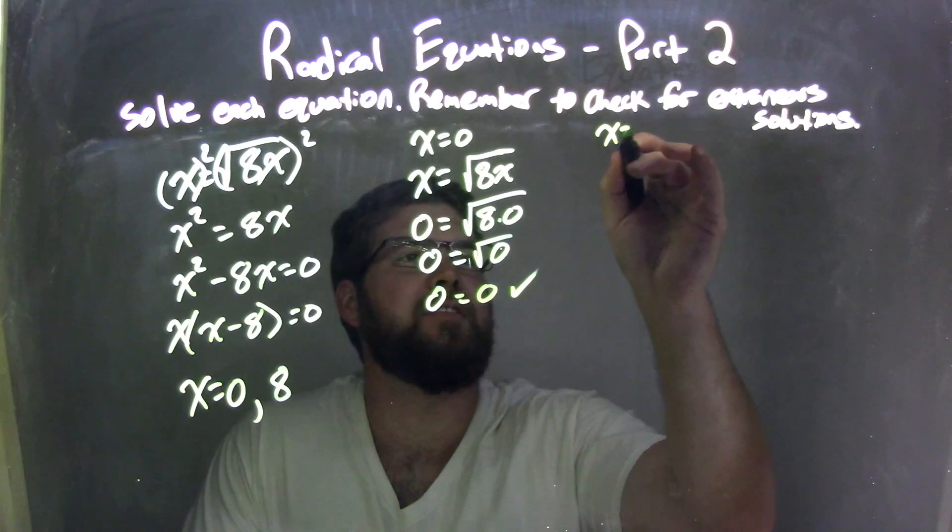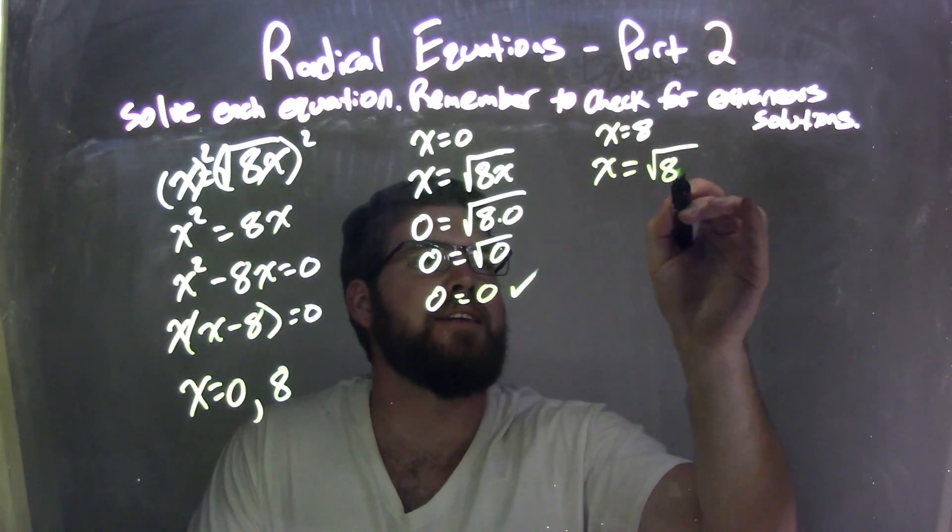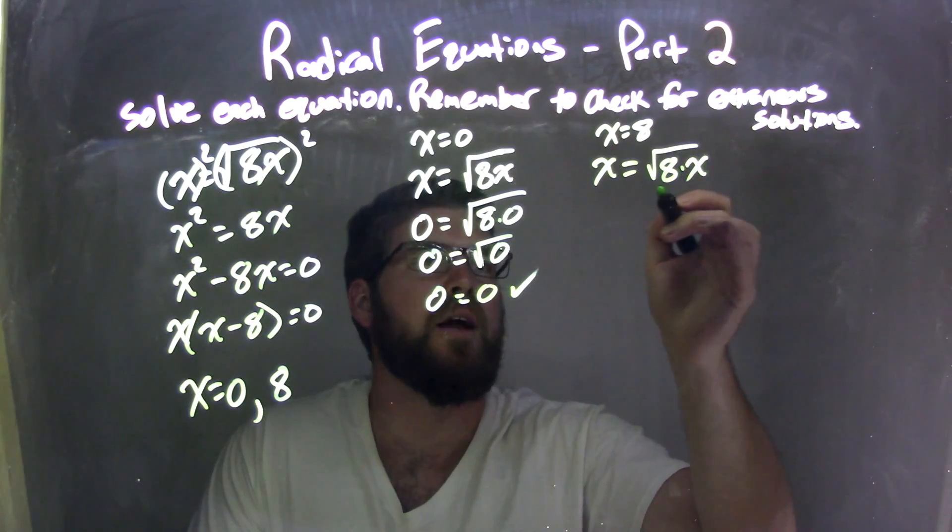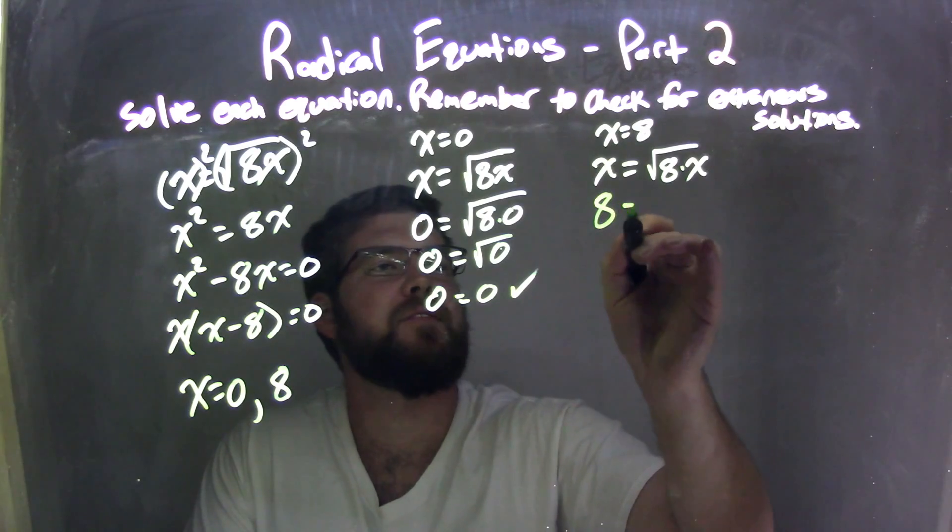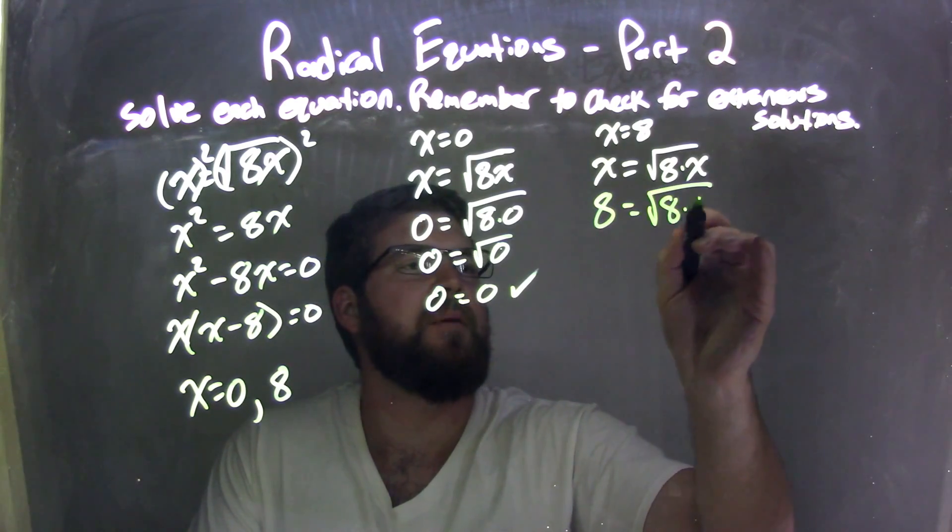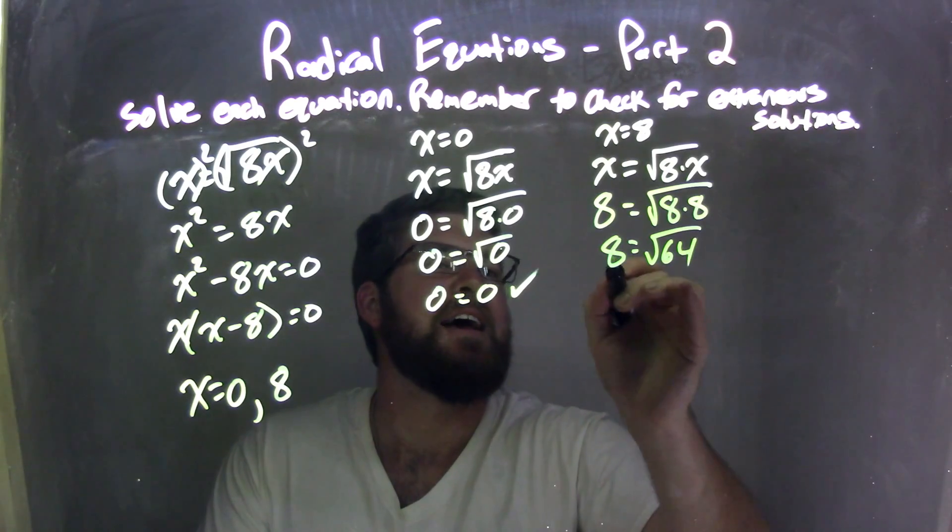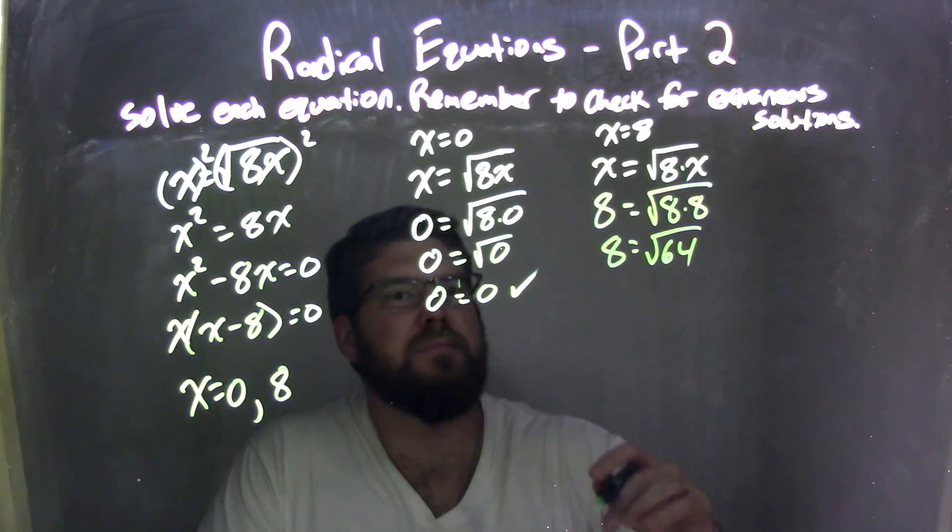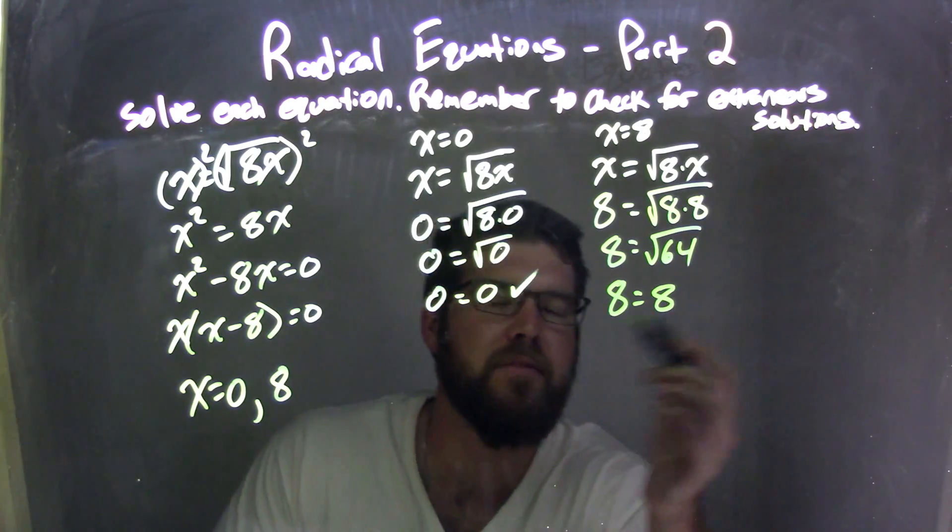Let's try the other one. x equals 8. Let's see if it's extraneous. So I'm going to take my original equation, x equals square root of 8 times x. Let's plug it in. So 8 for x. 8 times 8. Well, 8 times 8 is 64. Fantastic. Square root of 64 is 8, right?